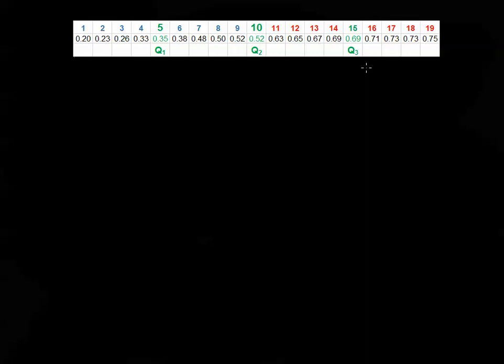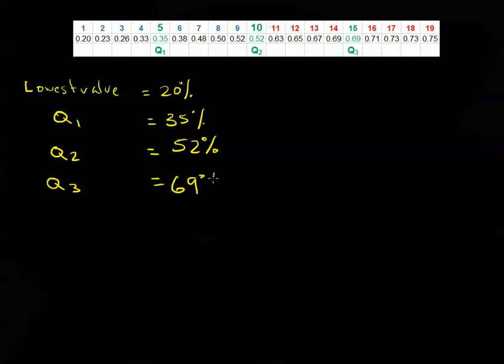The first one is the lowest mark, so the lowest value equals 20%. The first quartile was equal to 35%. The second quartile, or the median, is equal to 52%. The upper quartile is equal to 69%. The highest value equals 75%.